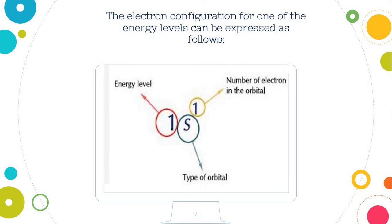The electronic configuration for one of the energy levels can be expressed as the following. Here the 1 represents the energy level. It's the number of the energy level. While the s is the type of the orbital. Maybe s, p, d, or f. And here is the number written up is the number of electrons in the orbital.